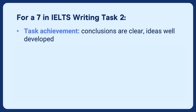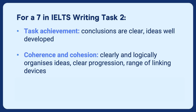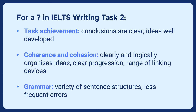For a seven, conclusions are clear and ideas are extended and developed adequately. For coherence, ideas are clearly and logically organized with a clear progression from one idea to the next, and there's a range of cohesive devices. And finally for grammar, they mention a variety of grammatical structures with less frequent errors.